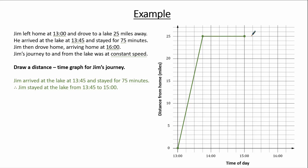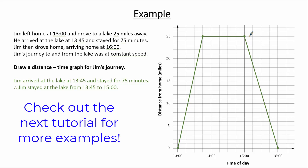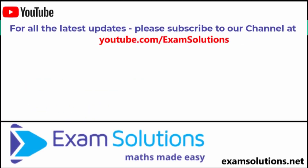For the final stage, Jim drove home arriving at 16:00, travelling 25 miles back. We mark the point at 16:00 and 0 miles, then join the two points with a straight line, completing the graph. In this example we were given information and used it to draw a distance-time graph. If you liked this video, please give us a thumbs up, leave your comments below, and subscribe to this channel to be the first to know when we release our next videos.